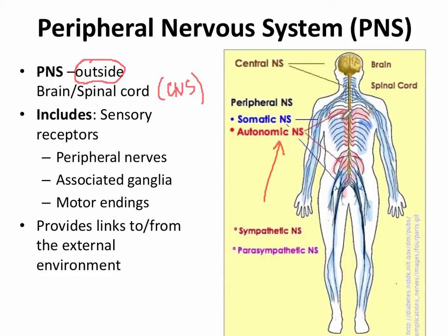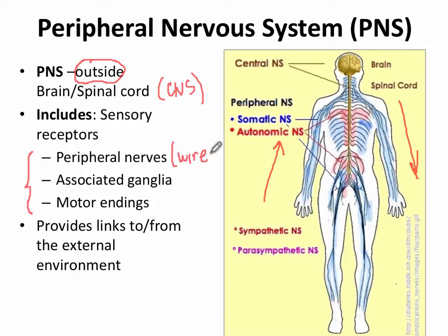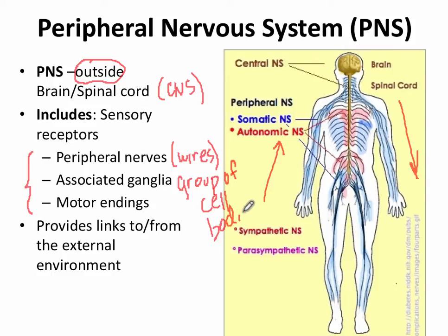I like to think of it as the wires that go in and also the wires that go out, though that's an oversimplification. In this chapter, we're going to be referring to three primary structures. The first is the peripheral nerves — the so-called wires — and the associated ganglia. A ganglia is a group of cell bodies where neurotransmitters are released and bind to another neuron.